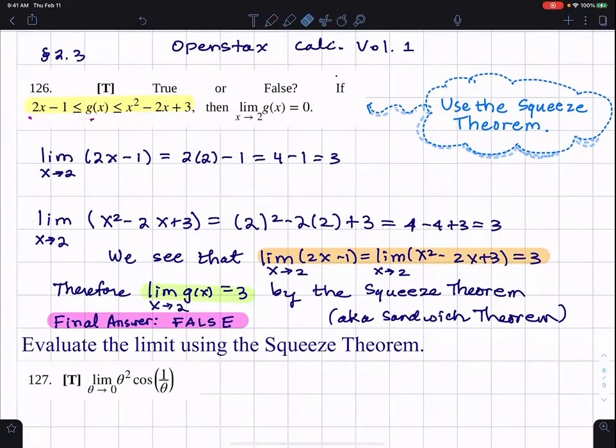I'm telling you, use the squeeze theorem. The squeeze theorem says take the limits of the first 2X minus 1, the last X squared minus 2X plus 3, show that limit's the same. And combined with the inequality, you can then conclude that the limit of the inside function is 3.